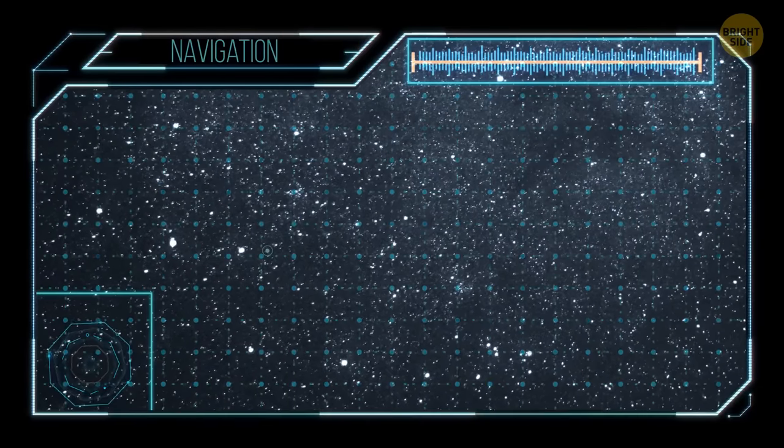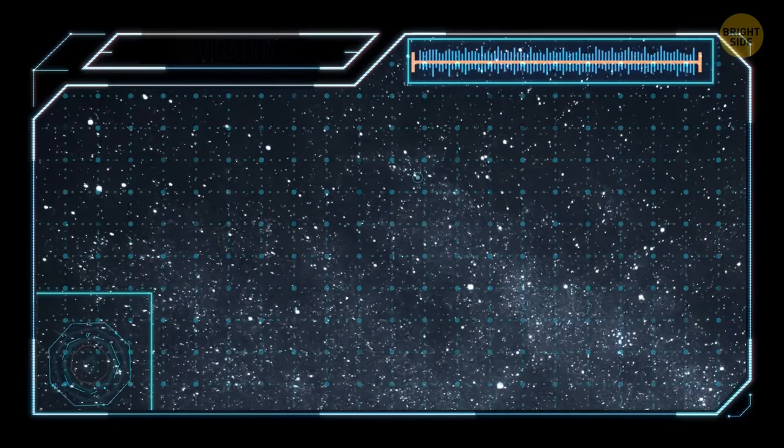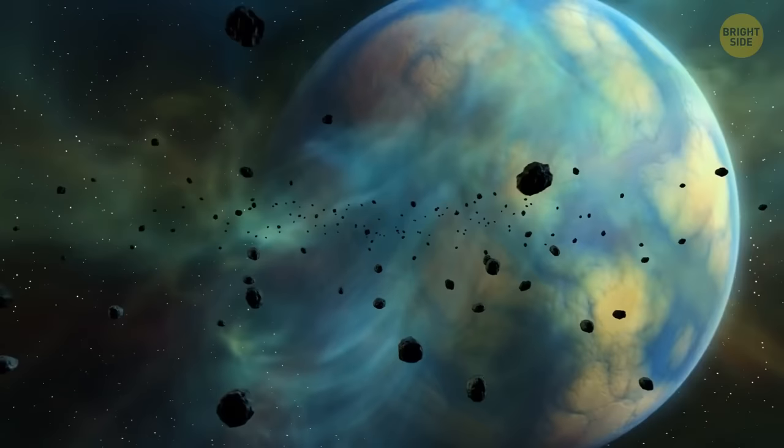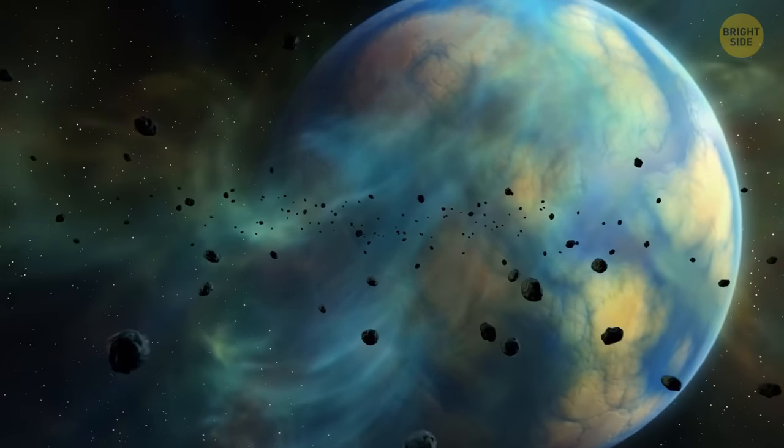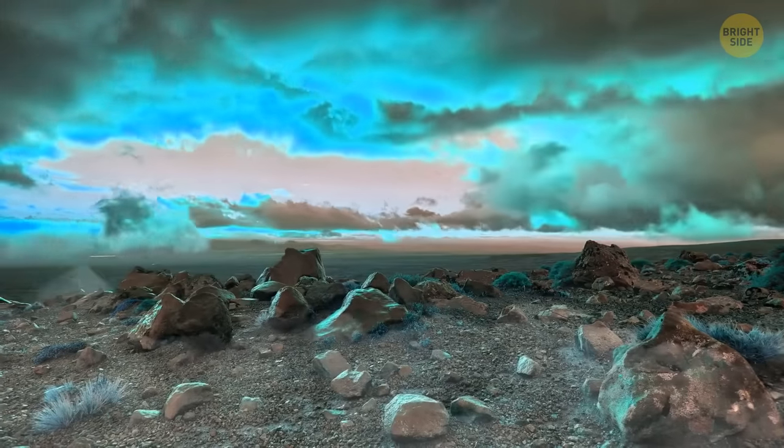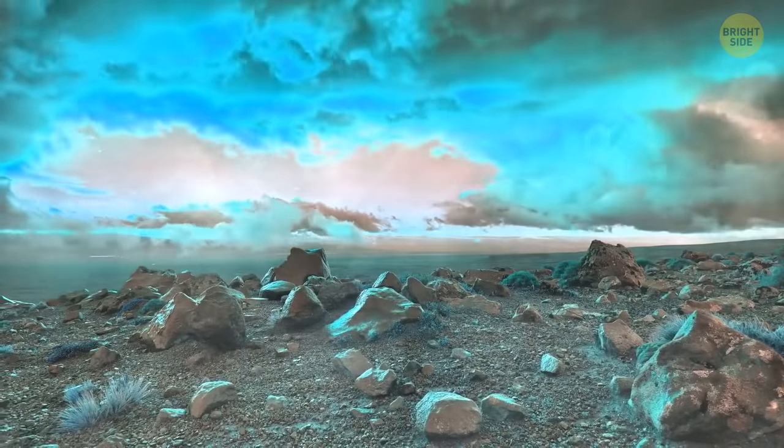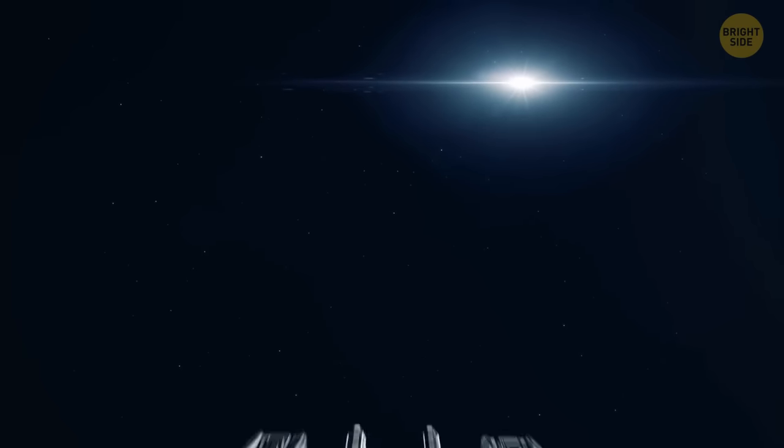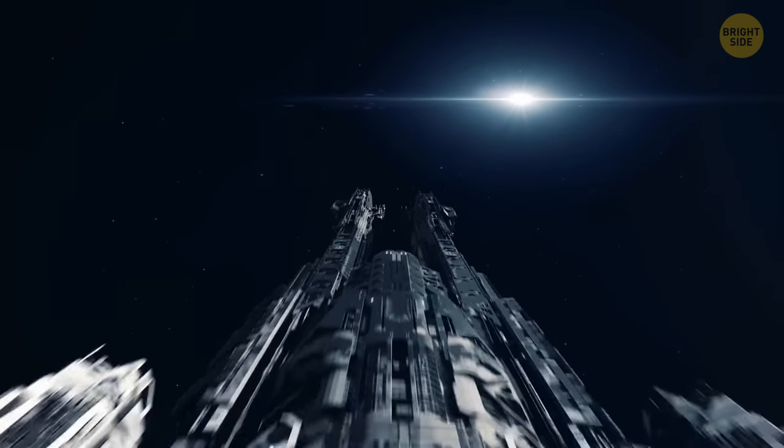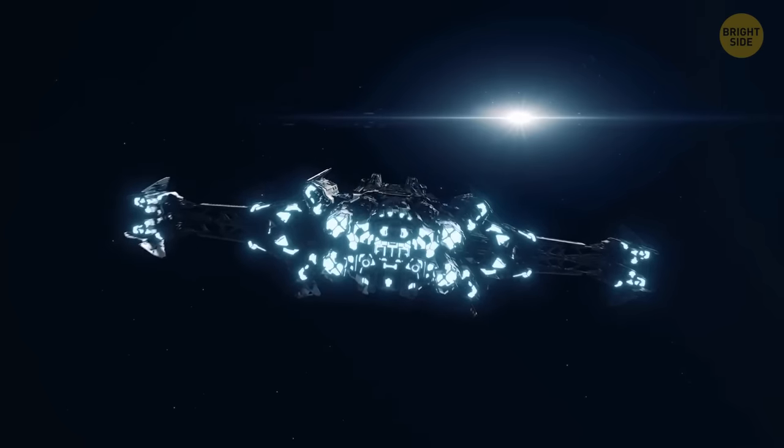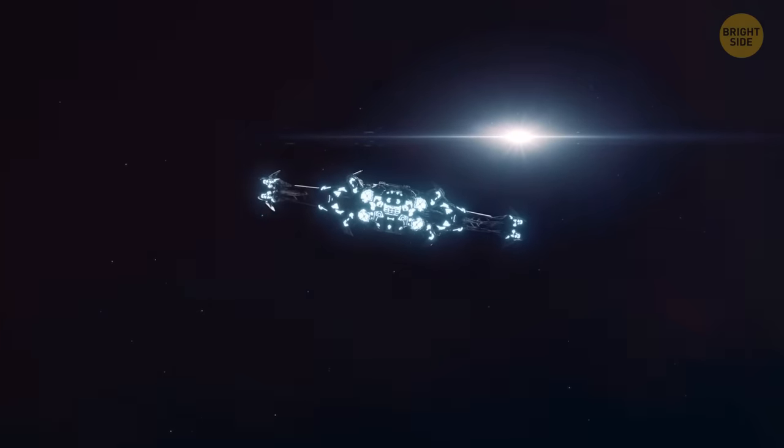For decades now, scientists have been discovering new planets outside our solar system. By 2023, we've found more than 5,000 of them, and many of these exoplanets could potentially even have life. Now, if you're ready for a wild ride through space, let's find out what potentially habitable planets we've discovered in the last few years.